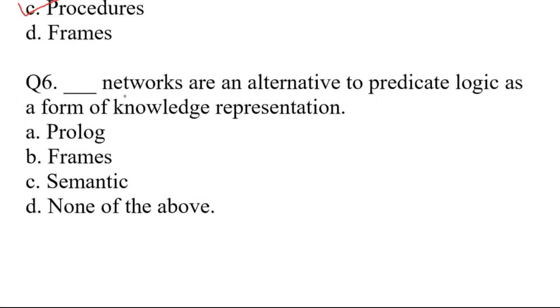Question number six. Dash networks are an alternative to predicate logic as a form of knowledge representation. The options are A. Prolog, B. Preempts, C. Semantic, D. None of the above. Right answer is option C. Semantic.